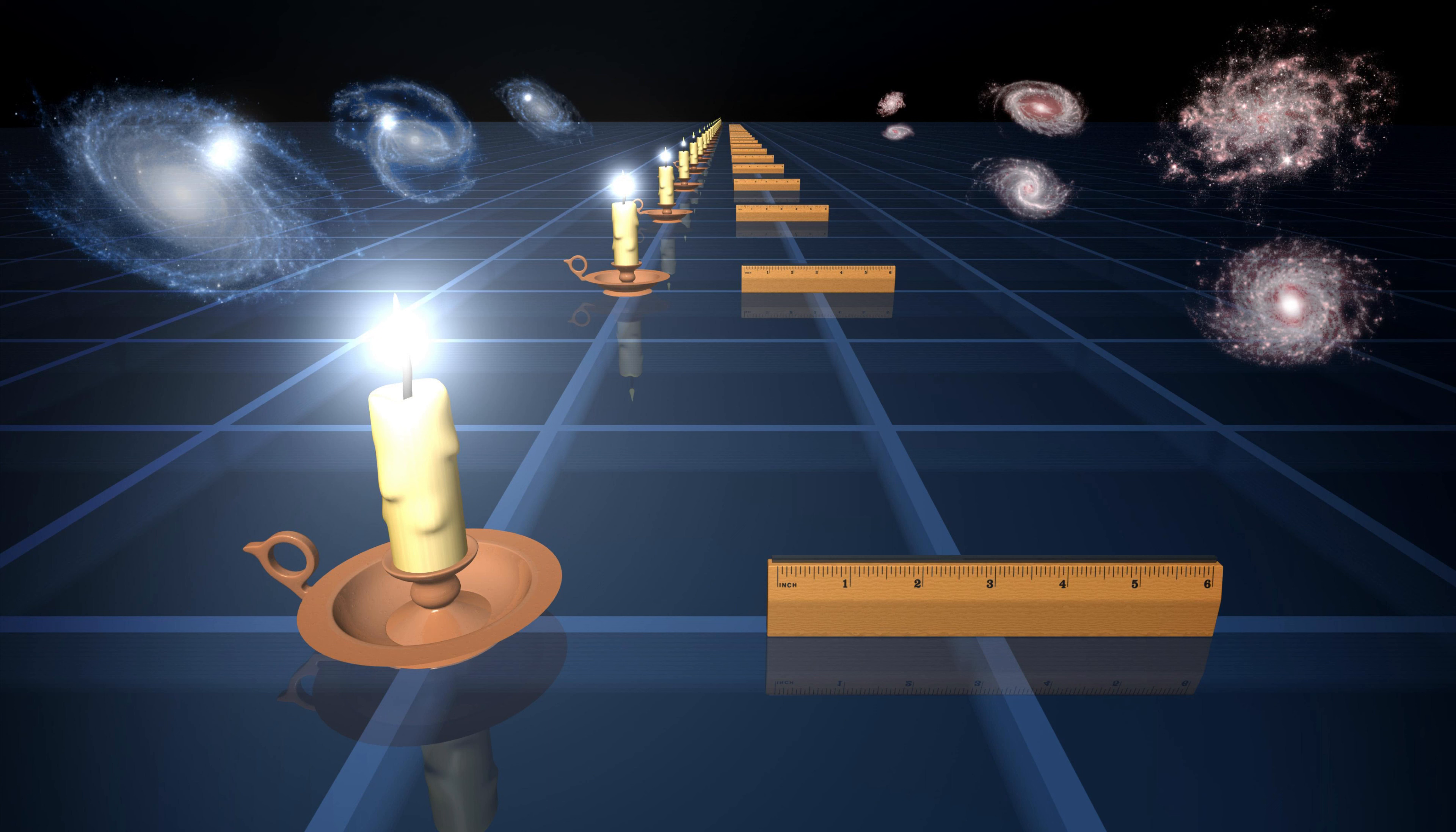Now you know what flat means when cosmologists refer to the universe as flat. They are not talking about the shape, but the curvature, which is about geometry. Again, while the term flat might lead us to imagine a 2D plane, the flatness of the universe in cosmology refers to its curvature on large scales, not its shape.